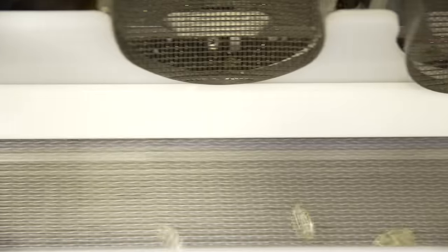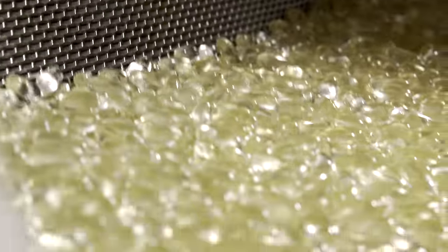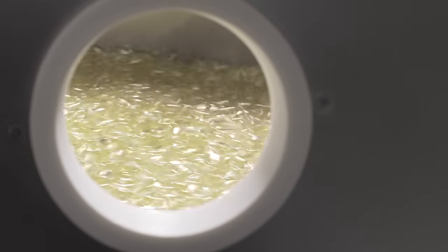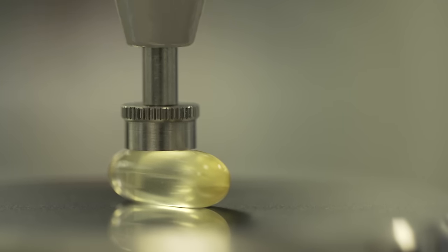Our encapsulation machines can produce up to 1,000 soft gels a minute, which are then dried in tumblers in special humidity and temperature controlled rooms.